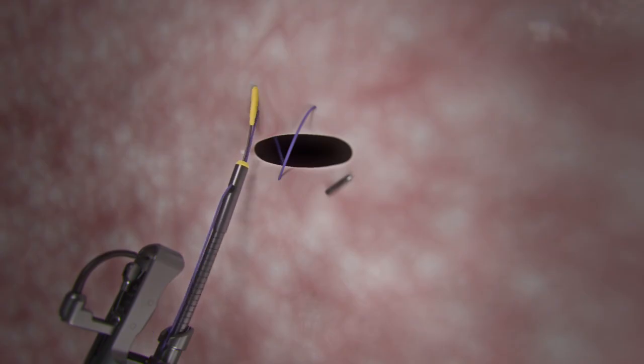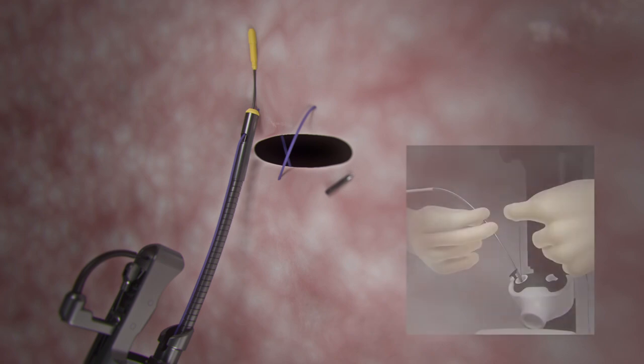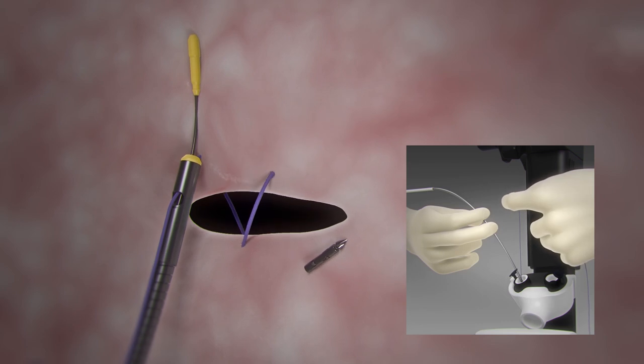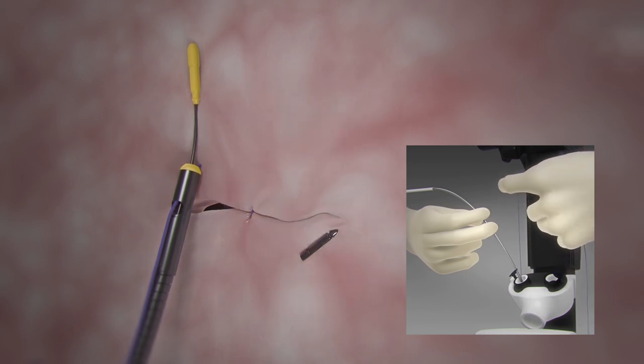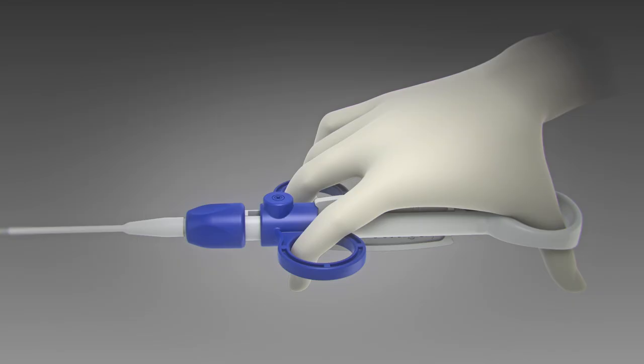Advance the cinch catheter until it extends approximately 3 centimeters past the overstitch end cap, targeting the placement of the first bite. While holding the cinch catheter in place, apply tension to the suture with small increasing increments of force. Care should be taken not to pull the suture too tight, resulting in breakage.